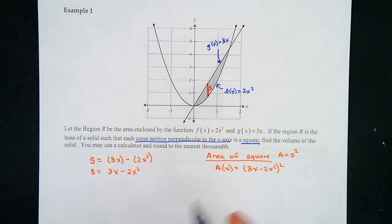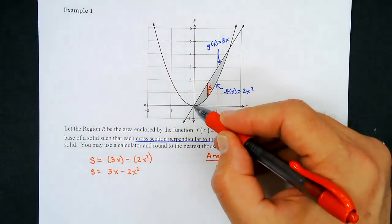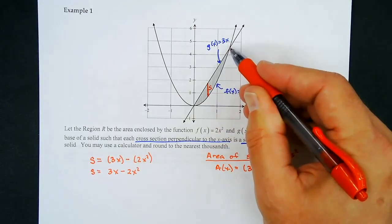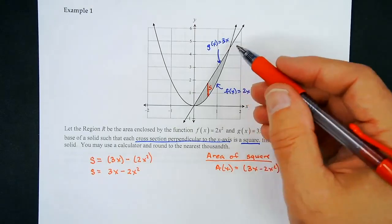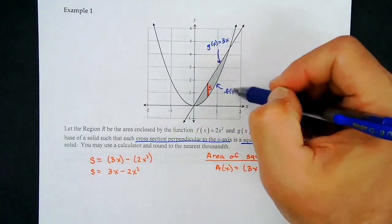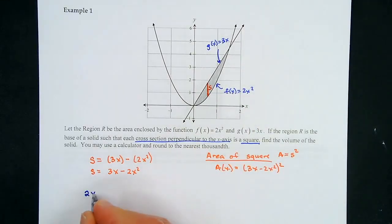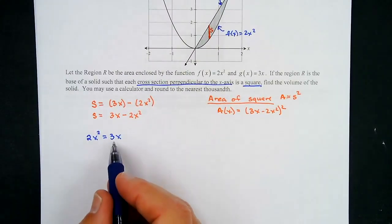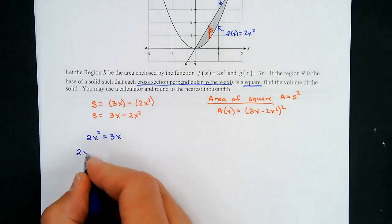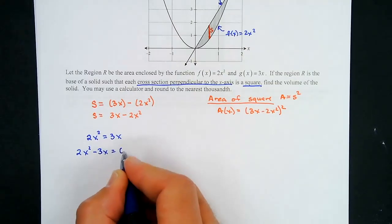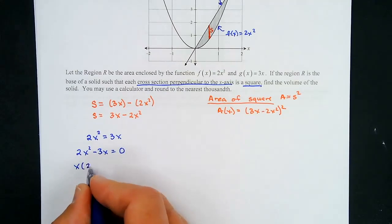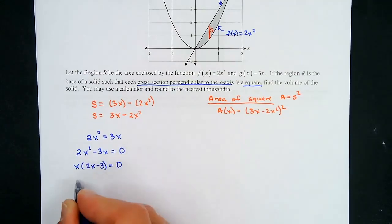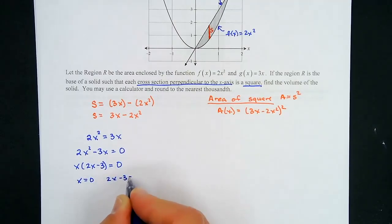We start creating these at the left intersection point and stop at the right intersection point. So I need to set the two functions equal: 2x² = 3x. Don't divide both sides by x — you'd lose a solution. Instead, subtract 3x from both sides: 2x² − 3x = 0. Factor out x: x(2x − 3) = 0, giving x = 0 or x = 3/2. So the x-coordinates are 0 and 3/2.